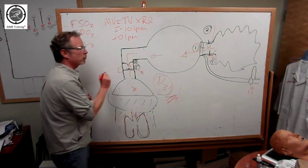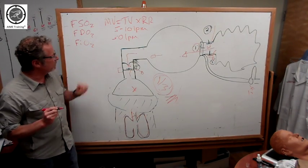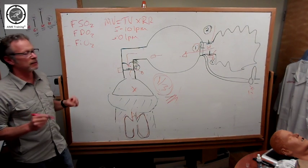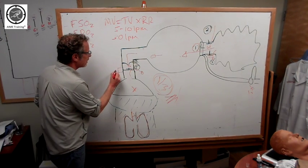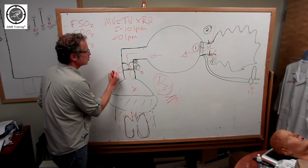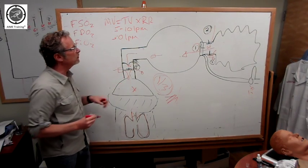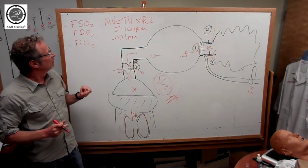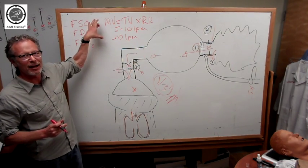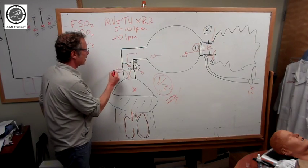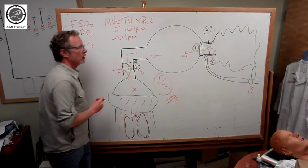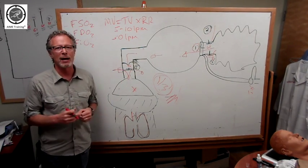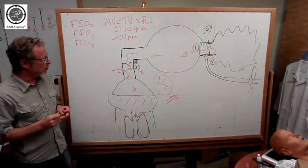But what's important to appreciate with this port, if this is an open port here, then it's another potential source of entrained air. So if you deliver inadequate flow for that patient's minute ventilation, then they're going to pick up that additional flow through entrainment of room air, and you're going to further dilute your source.